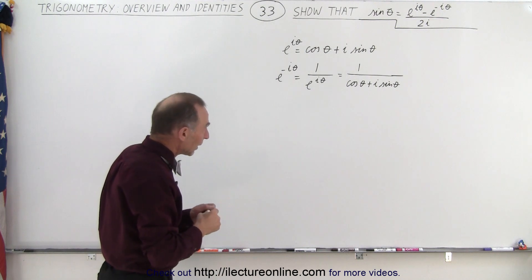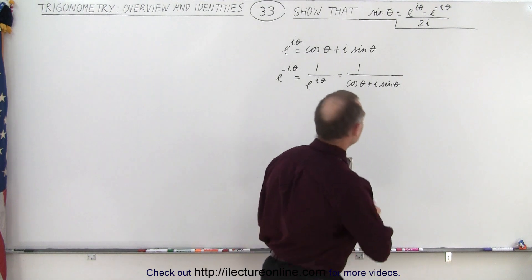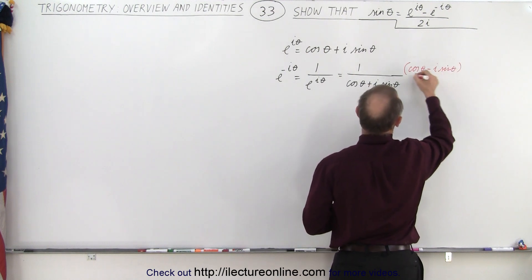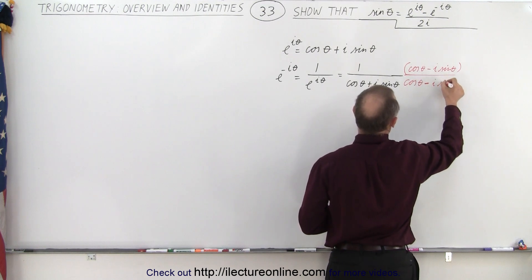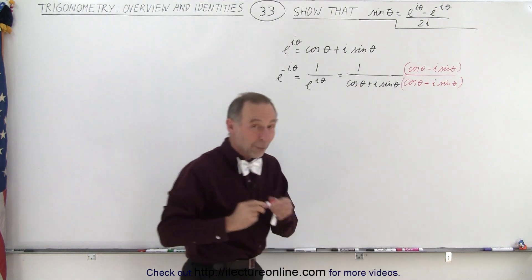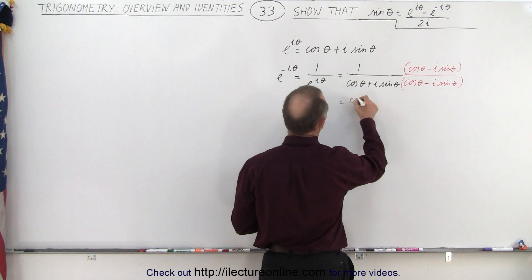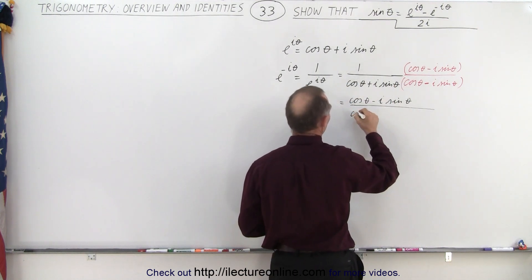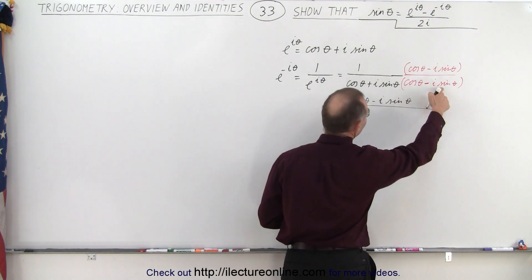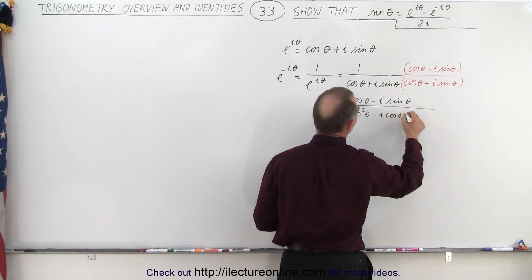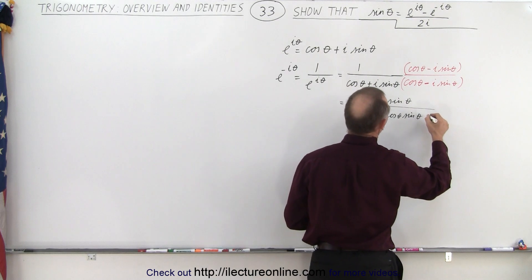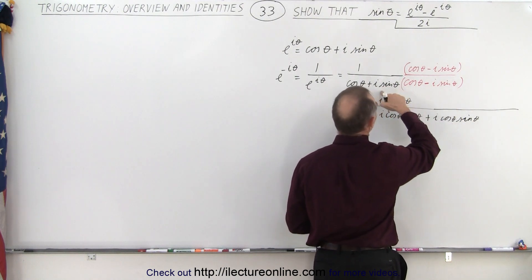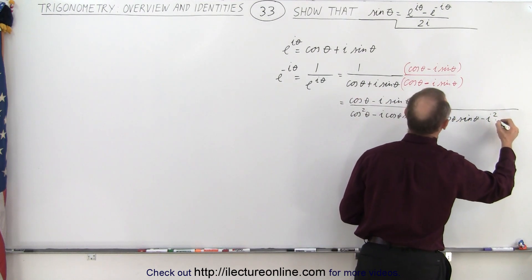Now we're going to multiply both the top and the bottom by the conjugate of that. So this can be written as: multiply this times the cosine of theta minus i sine theta, divided by the cosine of theta minus i sine of theta. When we do that we get the following: in the numerator we'll get the cosine of theta minus i times the sine of theta. In the denominator, cosine of theta times cosine of theta gives us cosine squared of theta. The cosine of theta times minus i sine of theta gives us minus i cosine theta sine theta. Multiplying the remaining two terms together we get minus i squared times the sine squared of theta.